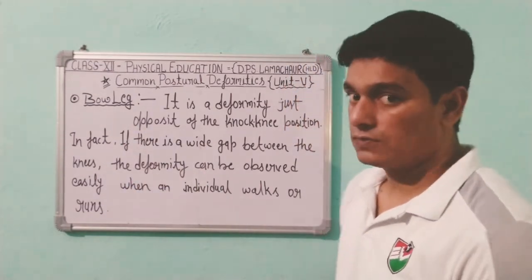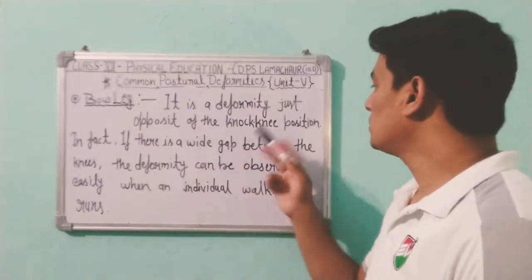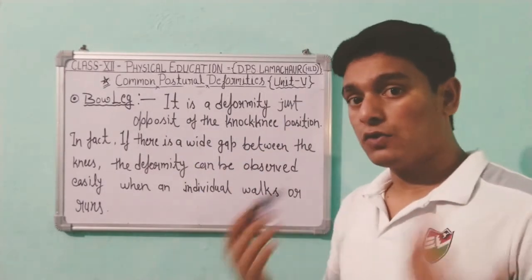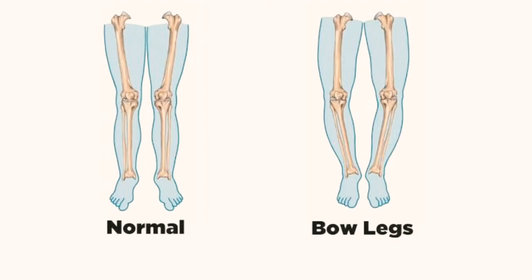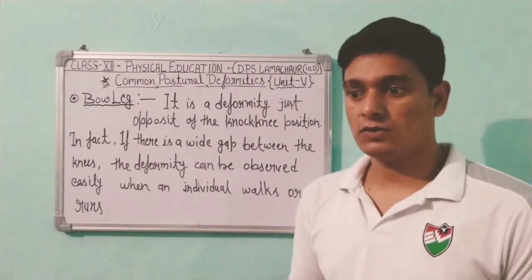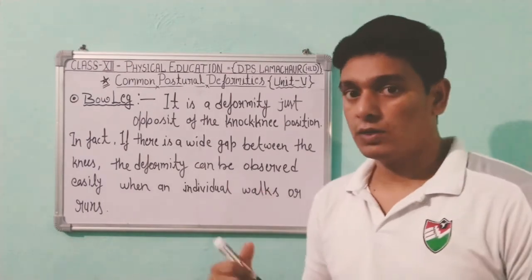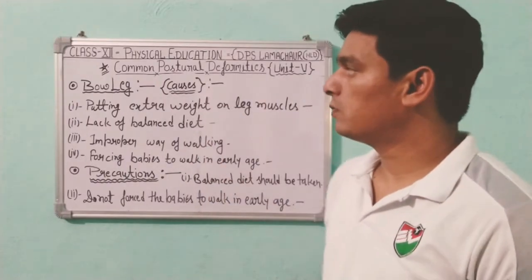The next deformity is bow leg. Bow leg is a deformity that is just opposite to the knock knee position. In bow leg, there is a wide gap between the knees, and the deformity can be observed easily when an individual walks or runs. If there is a wide gap between the knees, this deformity is present.